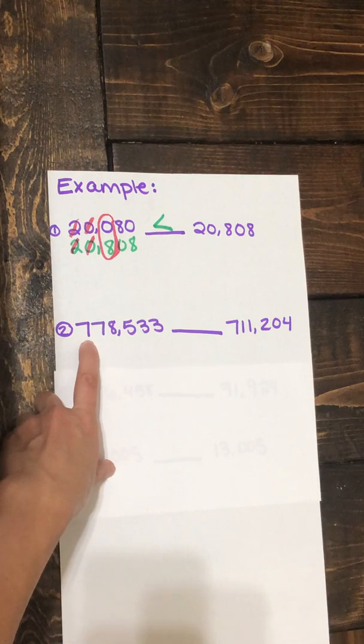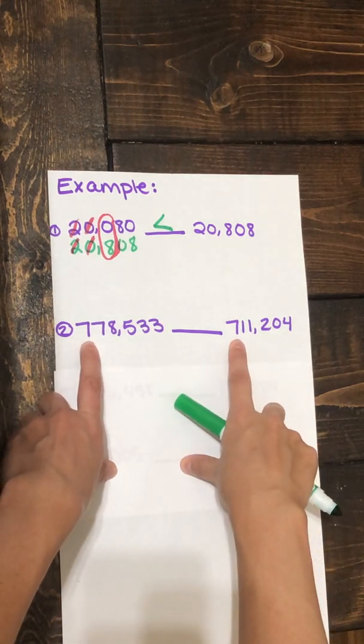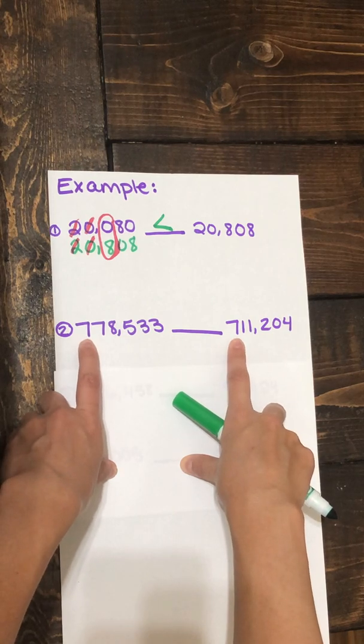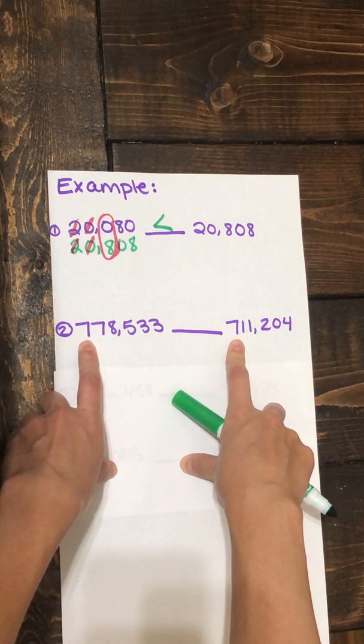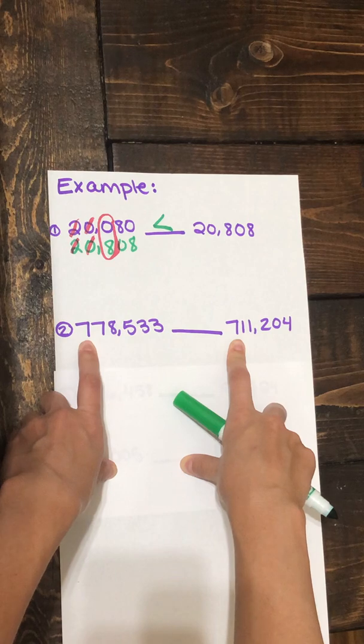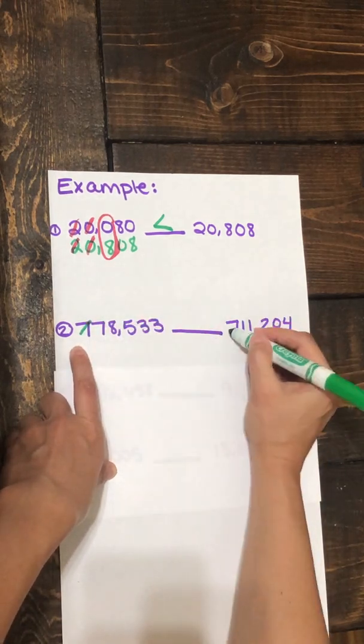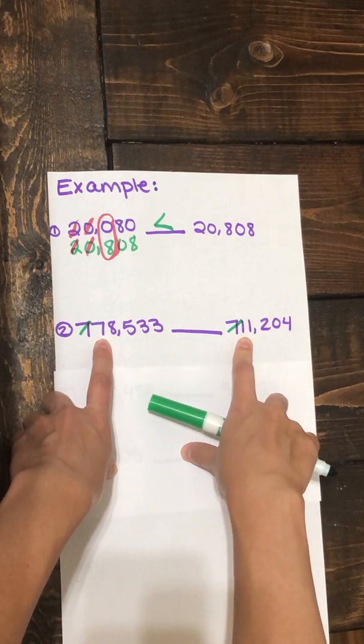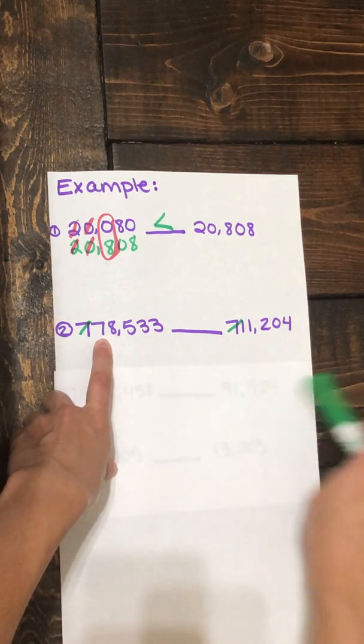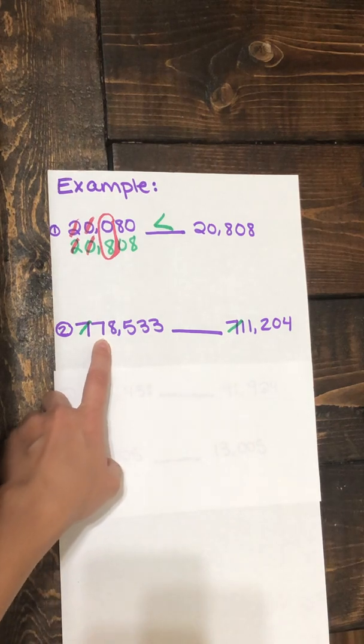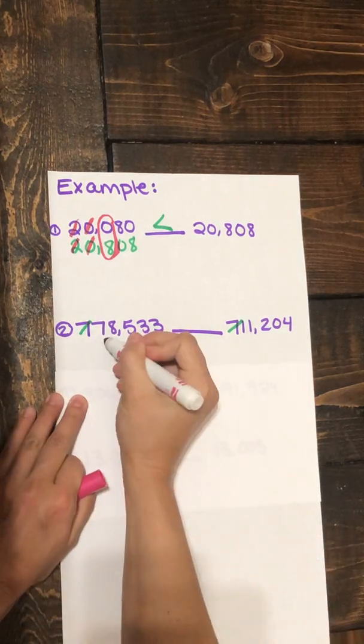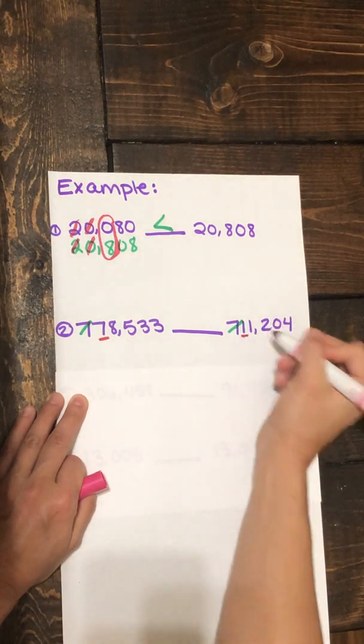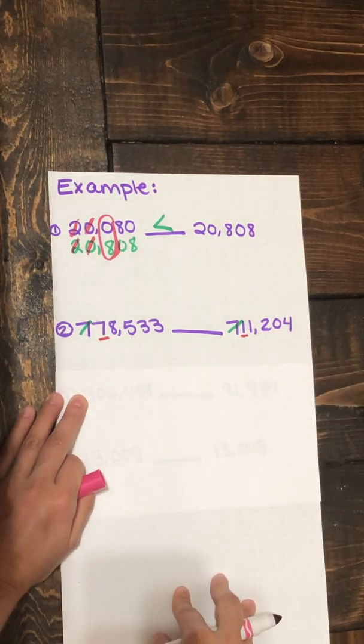I know that this seven and this seven are both in my hundred thousands place, but because they're the same number, that doesn't help me. So let's move on to the next digit. Now I have another seven and a one. Let's think, which has a greater value? Does the seven in my ten thousands place or the one in my ten thousands place have a greater value?